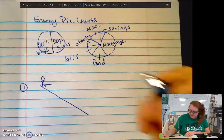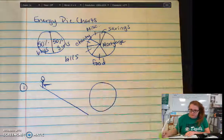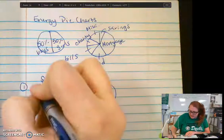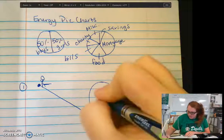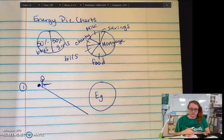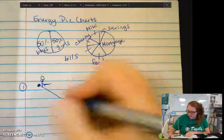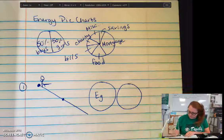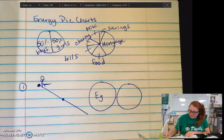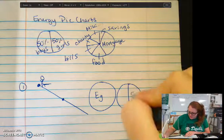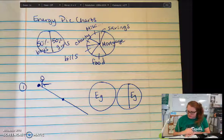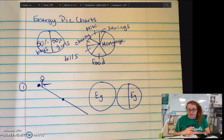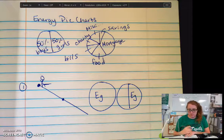So here's our happy kid. Now they start at a height, so I know if we're starting at a height and we're not moving at this point, I have all potential energy and all gravitational potential energy. Let's say we get right here. Here I have about half the height, so half of my pie becomes Eg. Now I've also started to speed up, so I'm moving pretty fast at that point. So I would say a big chunk of that is Ek.